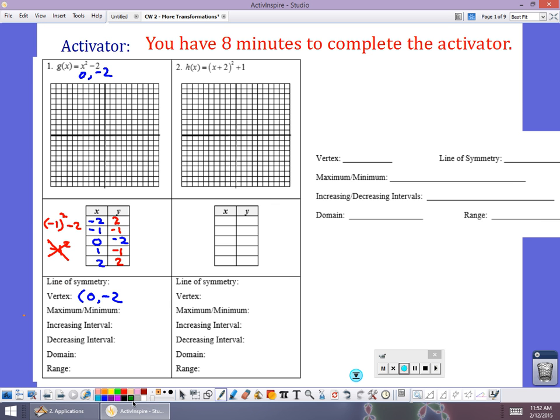We want to graph those points. So zero negative two. One negative one. Negative one, two, two. And negative two, two. And then we want to connect our dots. A smooth curve. I saw lots of smooth curves. I didn't see any v's last night on your homework. So good job. That's it. That's our parabola.